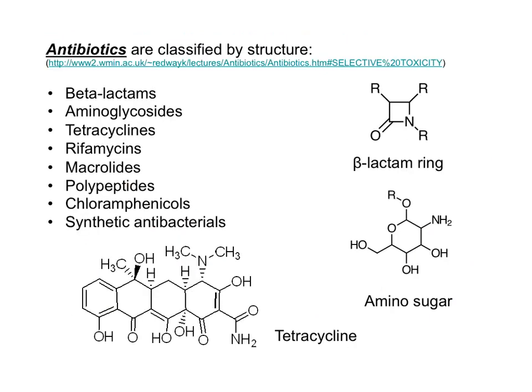Antibiotics are classified by structure. Penicillin is an example of a beta-lactam. Beta-lactams have that square beta-lactam ring. Neomycin, which is found in Neosporin, is an example of an aminoglycoside. Tetracycline is a large compound with four interconnected rings.